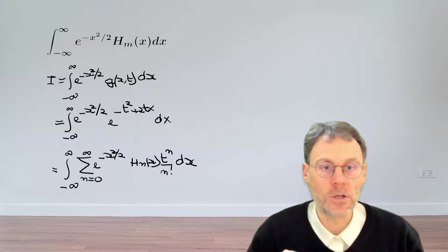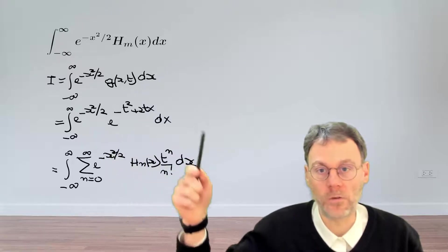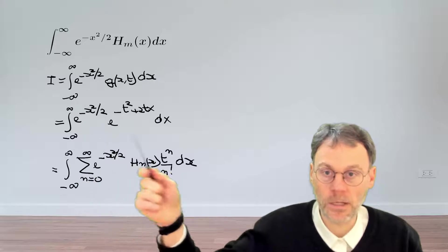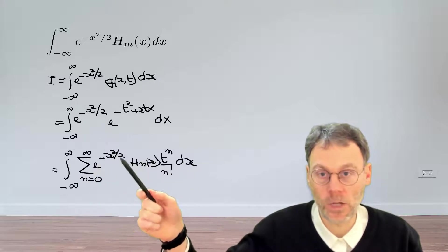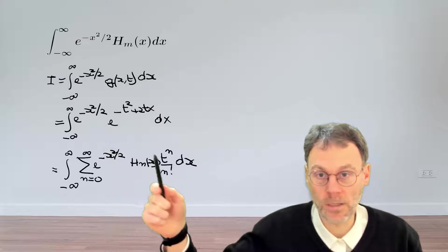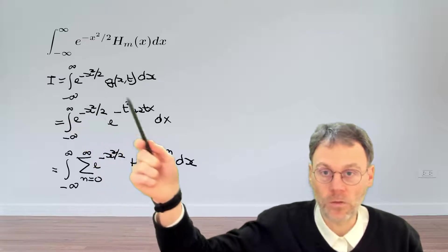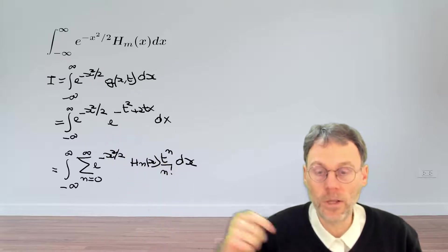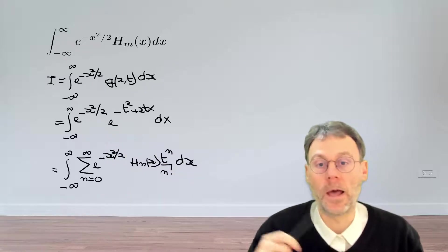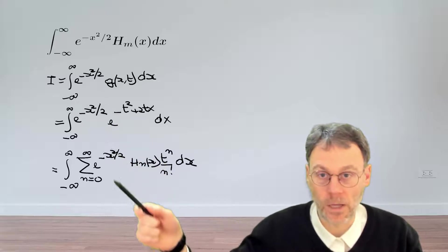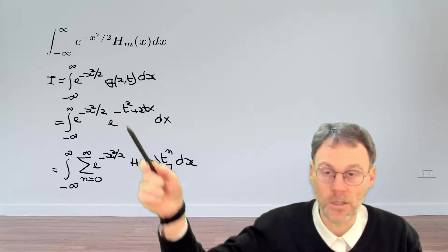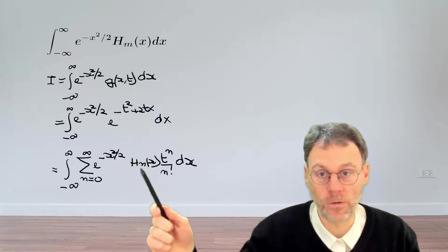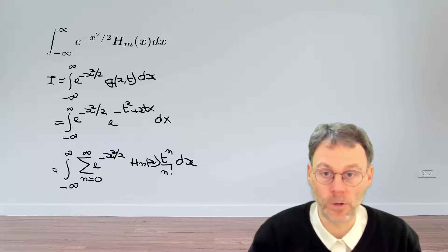So now we've expressed this integral in two different ways. On this side here, on the right hand side, we have integrals that look very much like the integrals we need to calculate. And here on the left hand side we have an integral involving an exponential, which hopefully we will be able to calculate rather trivially. And then by identifying what's happening on both sides of the equality sign here, hopefully we will be able to draw some conclusions with respect to the value of this integral that we're after.